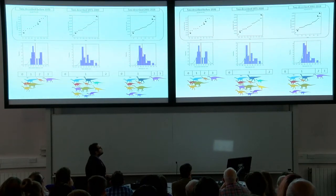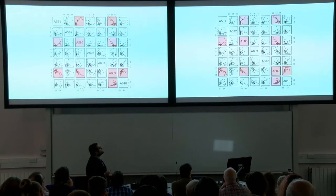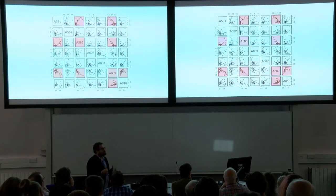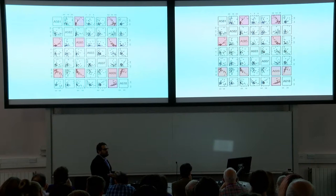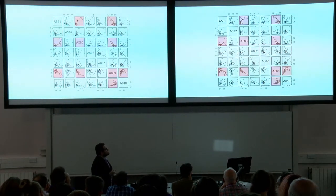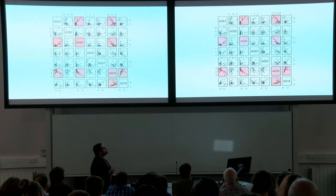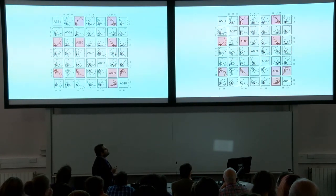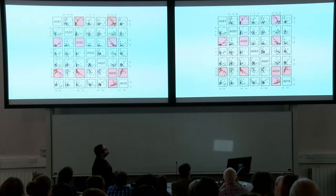I collected the continuous dataset from 72 species of basal sauropodomorphs — and this example shows just characters that come from the ilium. I checked for correlations between them and managed to eliminate, in this case, correlations among six characters.